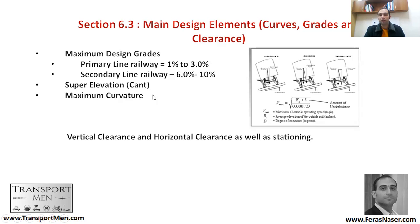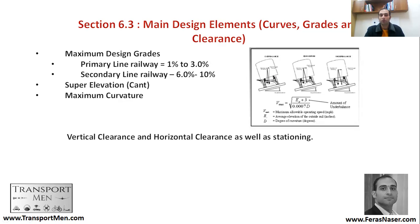Super elevation also needs to be considered. You need to account for the maximum speed on curves to handle centrifugal force, and there is an equation to calculate the maximum speed. You should also think about maximum curvature, vertical clearance, horizontal clearance, and stationing. These are some of the key aspects of railway alignment design.